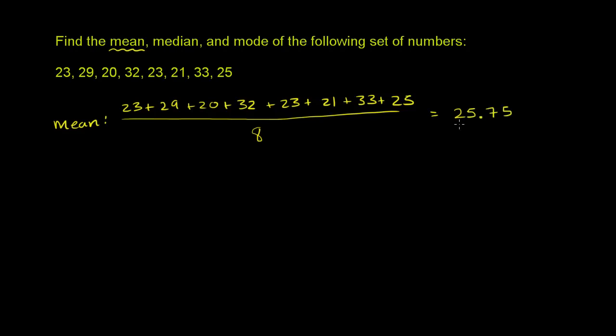So this is one way to kind of measure the center, the central tendency. Another way is with the median, to pick out the middle number, the median. And to figure out the median, what we want to do is order these numbers from least to greatest.